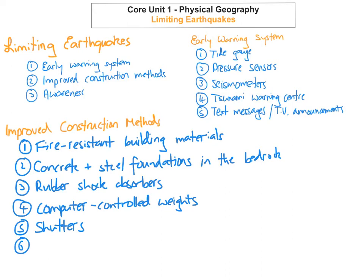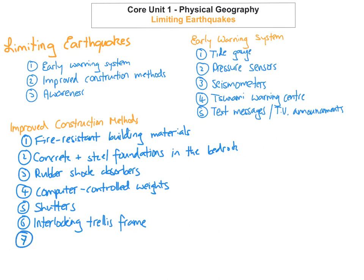Another improvement is interlocking trellis frames, which help to stabilise the building during earthquakes. The seventh way is having open areas for people to evacuate and assemble during evacuations. During an earthquake people can go out safely and assemble on green space — an open area where nothing can fall on them.